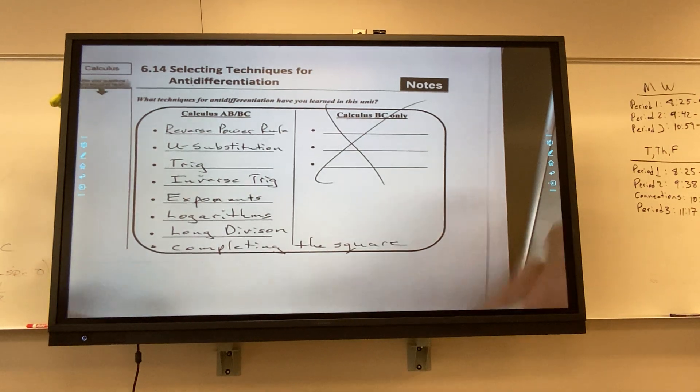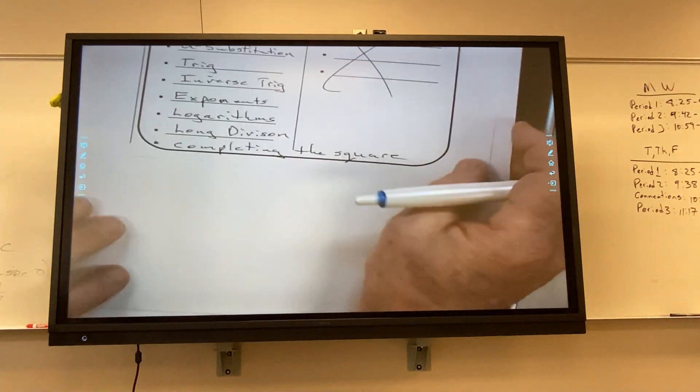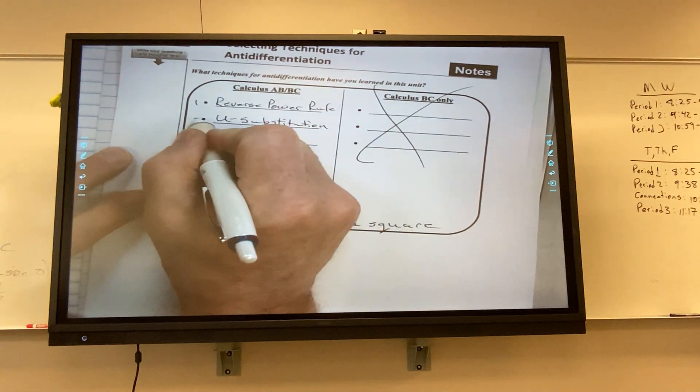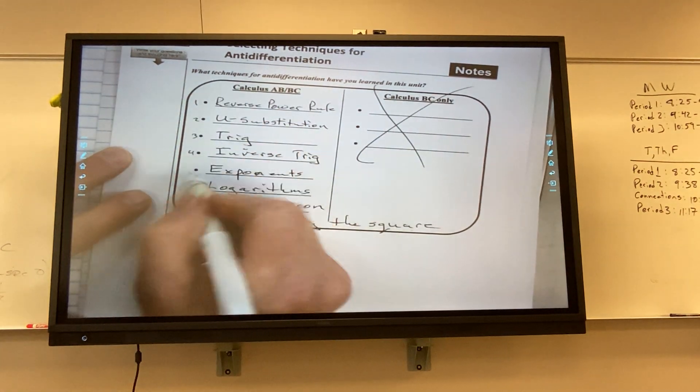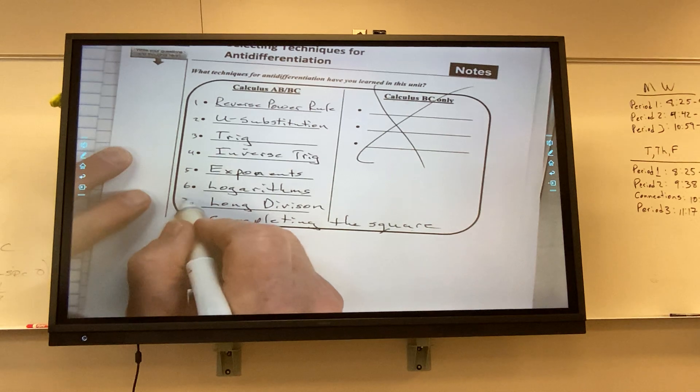All right. And I'm going to write these down as 1, 2, 3, 4, 5, 6, 7, 8.